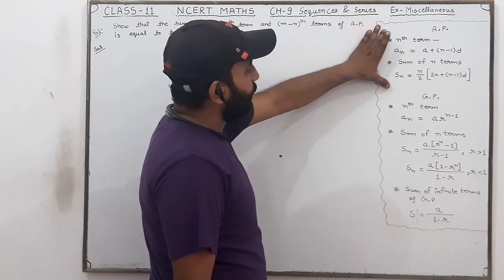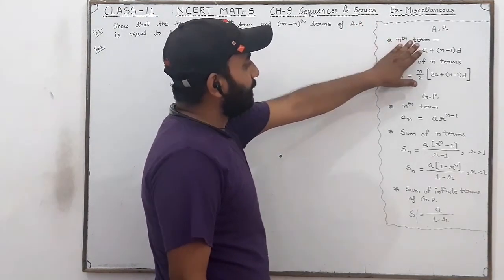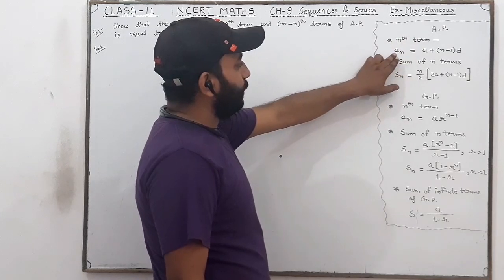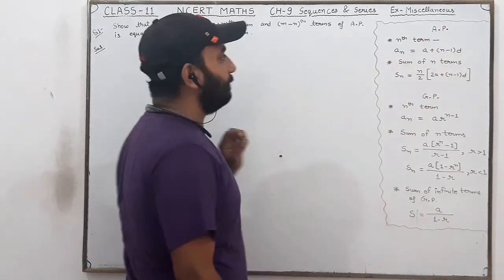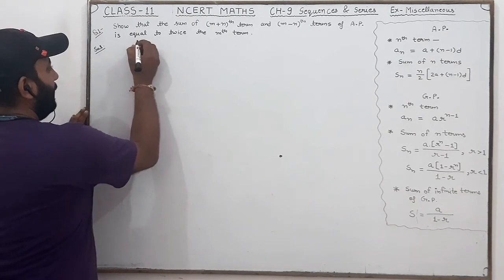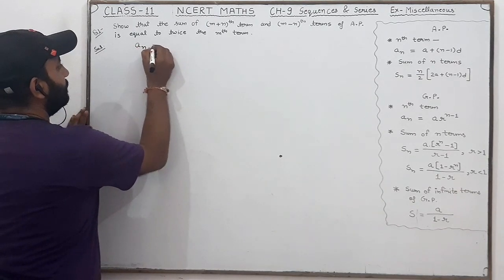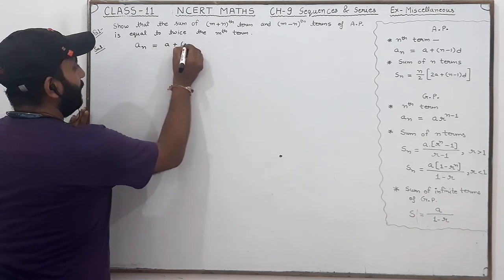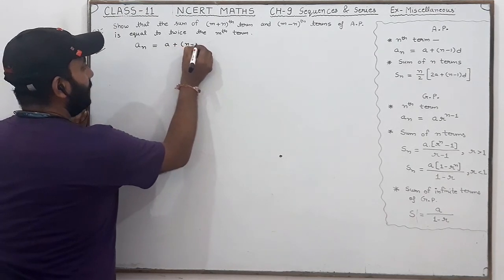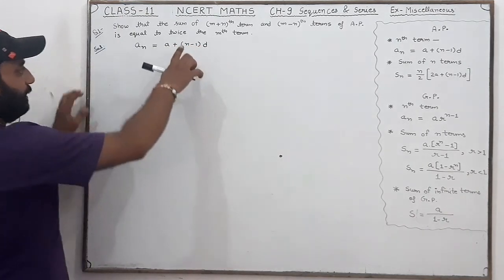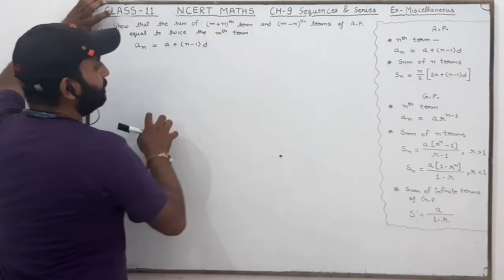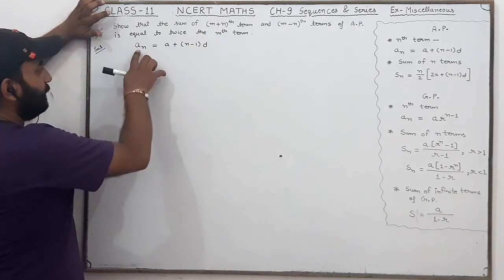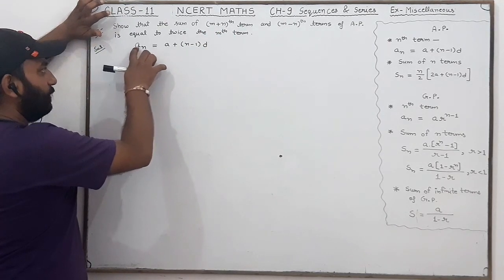I have two formulas here. The nth term formula is: a_n = a + (n-1)d. So first I have this formula. This formula gives us the nth term.